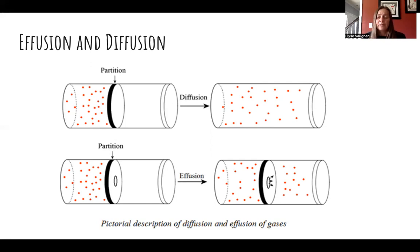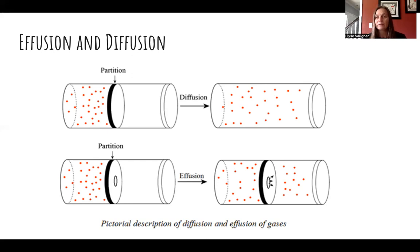Effusion is when gas leaks through or moves through a small hole. It relies on the same mechanism — particles in constant random rapid motion — but going through a small opening, so it's generally a bit slower. Again, the smaller the molecules, the faster they will effuse.